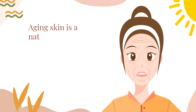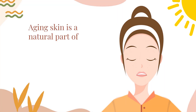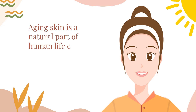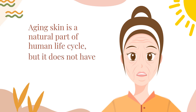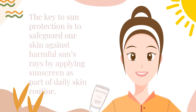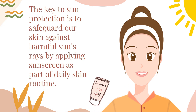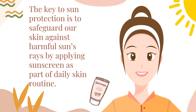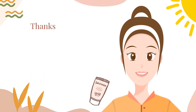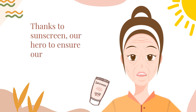Aging skin is a natural part of the human life cycle, but it does not have to be mainly caused by sun damage. The key to sun protection is to safeguard our skin against harmful sun rays by applying sunscreen as part of a daily skin routine. Thanks to sunscreen — our hero — to ensure our skin stays healthy and beautiful.